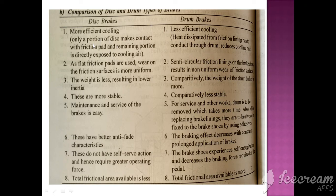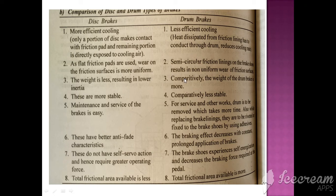In disc brakes, only the disc makes contact with the friction pad and it is directly exposed to cooling air. As flat friction pads are used, wear on the friction surface is more uniform. In drum brakes, the semi-circular friction lining results in non-uniform wear. Disc brake weight is less, resulting in lower unsprung mass, whereas drum brake weight is more due to the various components.